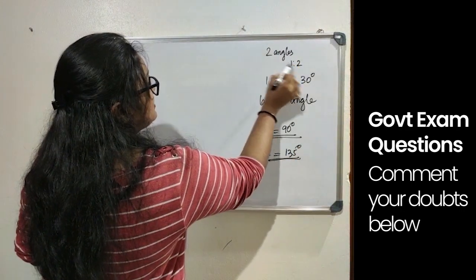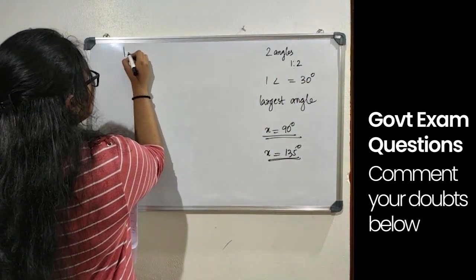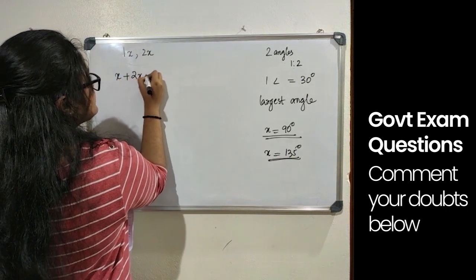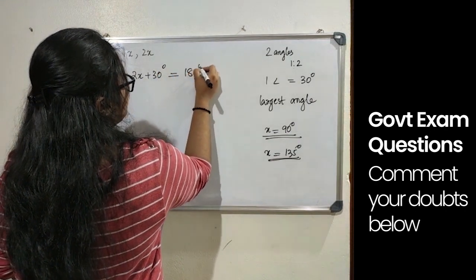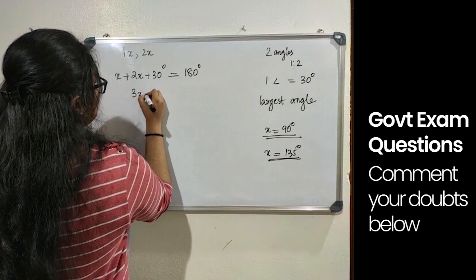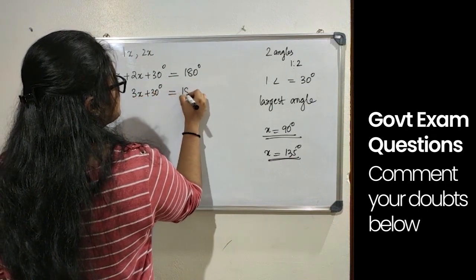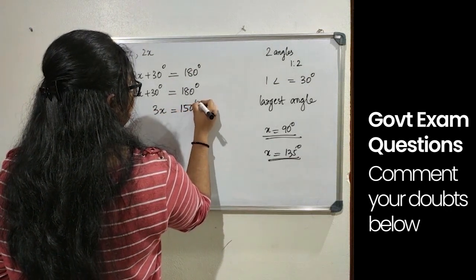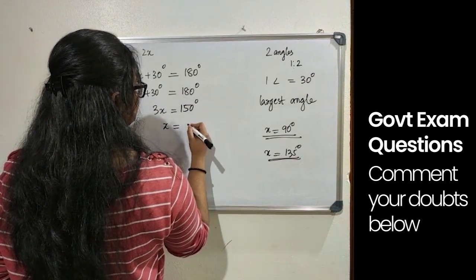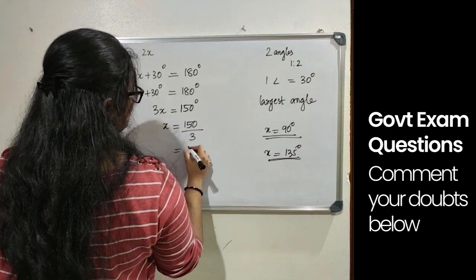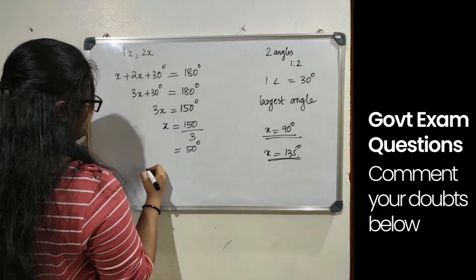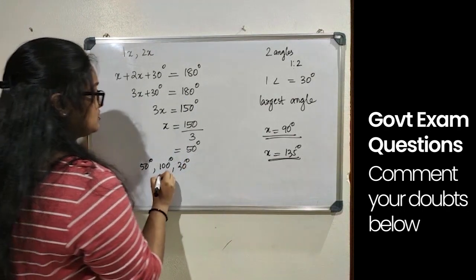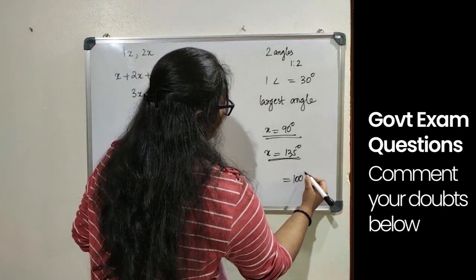We know that two angles are in the ratio 1 is to 2. Let the angles be 1X and 2X. So X plus 2X plus 30 degree equals 180 degree. That is 3X plus 30 degree equals 180 degree. 3X equals 150 degree. So the angles will be 50 degree, 100 degree and 30 degree.